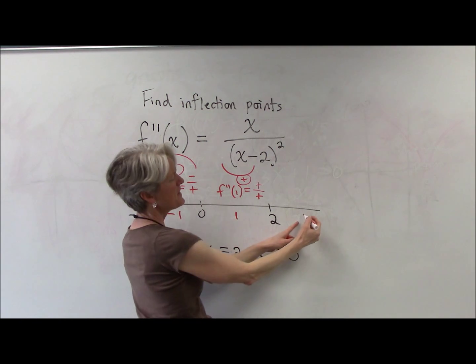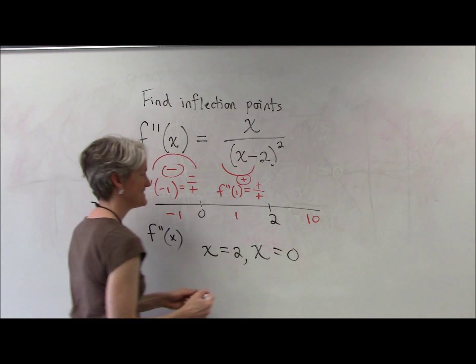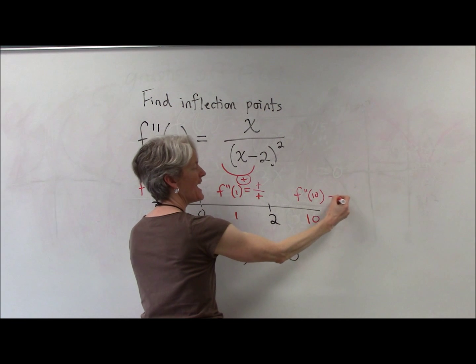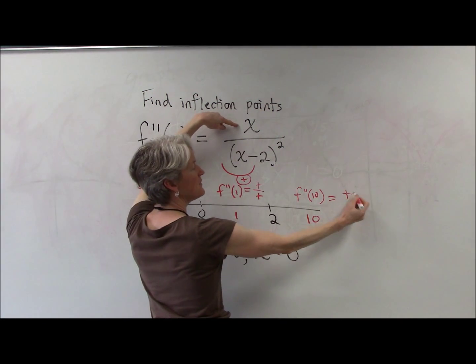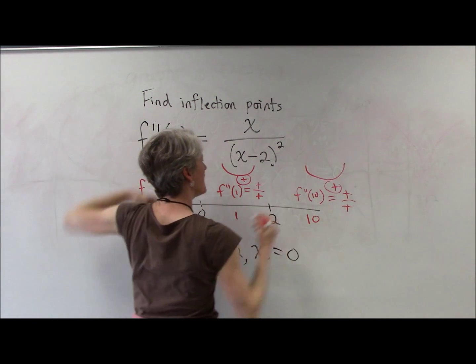Give me a number bigger than two. Ten. You thought I was going to say three, right? Good. Okay. Taking the second derivative, analyzing the second derivative when x is ten, we have a positive in the numerator, a positive in the denominator. That is still concave up.